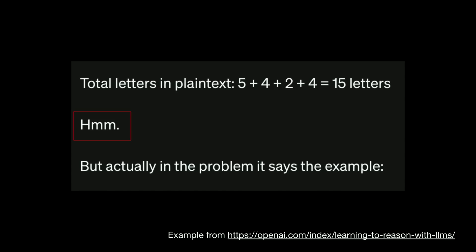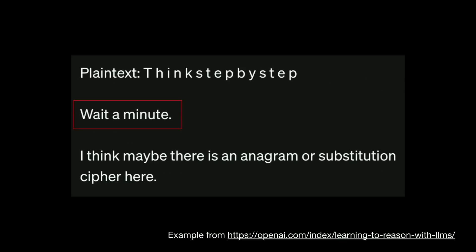Last month when we released O1 preview, we showed some examples of the actual chain of thought going on. In this particular example, we have a cipher text that the model is trying to decipher. The model says 'hmm,' recognizing that its current thinking strategy isn't leading anywhere and tries something different. Then the model tries something out and says 'wait a minute,' realizing a slightly better approach and trying that next.